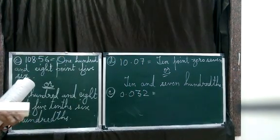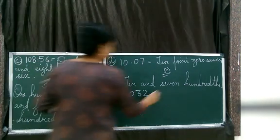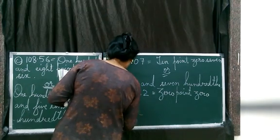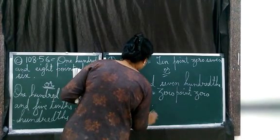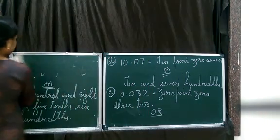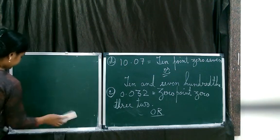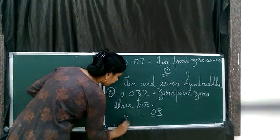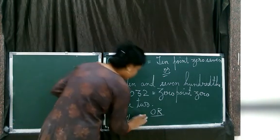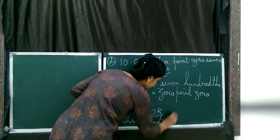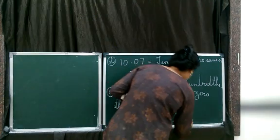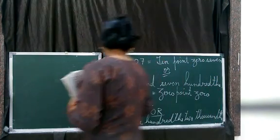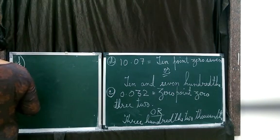0.032. Or, what can you say? 3 hundredths 2 thousandths. Zero zero places you will leave. So 3 hundredths, 2 thousandths. This completes E.